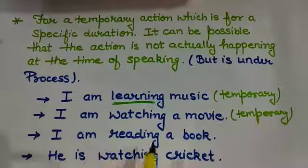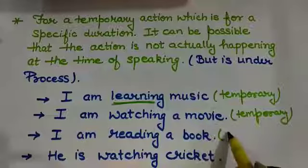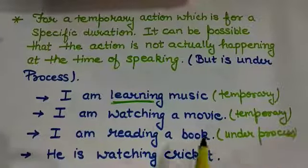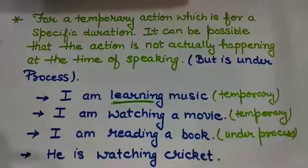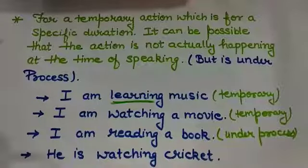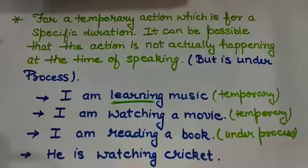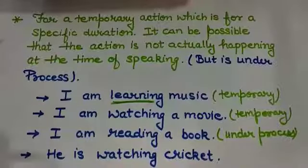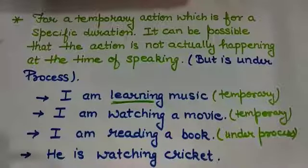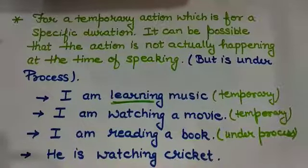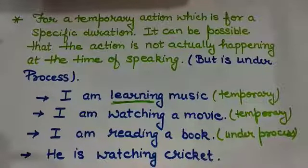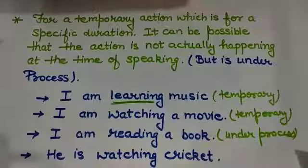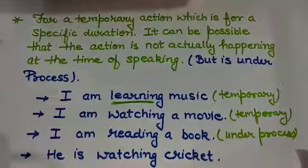Let us see one more example. I am reading a book. See, reading is under process but we know that one day or in a specific time, the book will be finished. Hence, we use temporary action for it and we have used present continuous tense for it. Similarly, there can be many examples like he is watching cricket and students are playing. All these examples come under temporary actions. So we use present continuous tense for them.